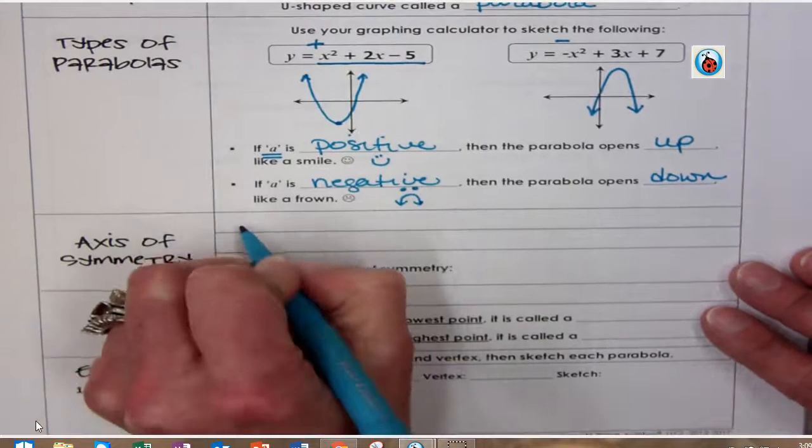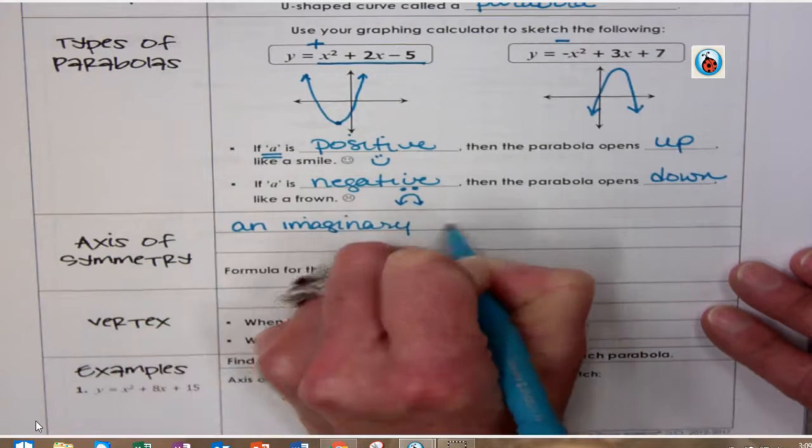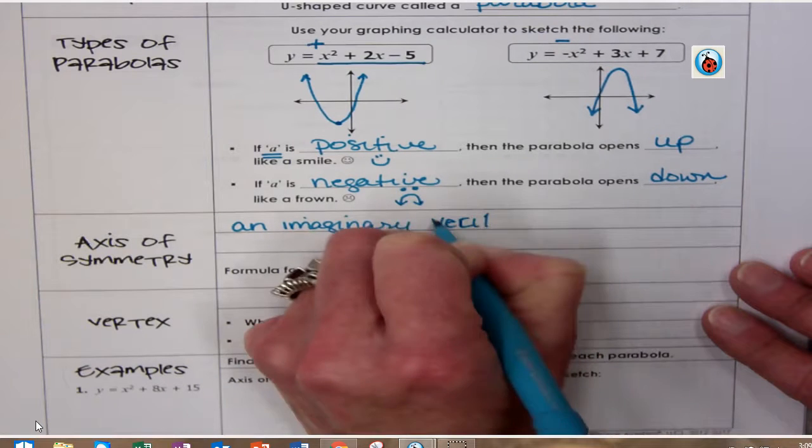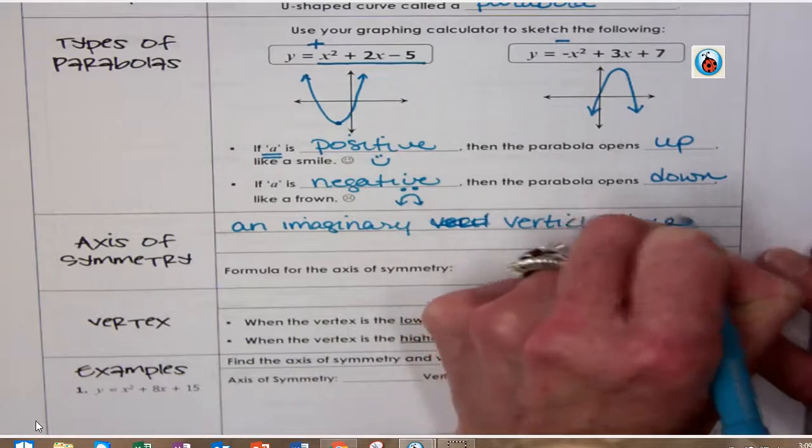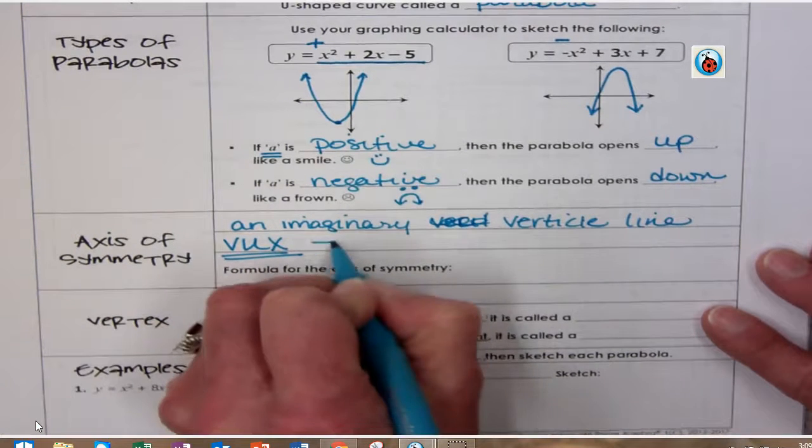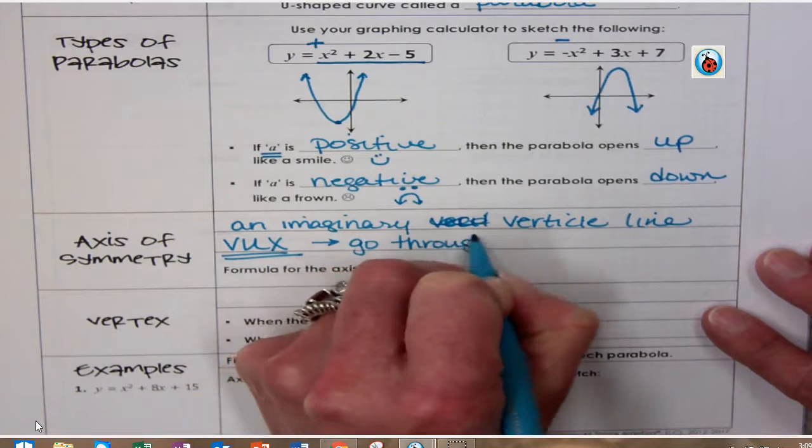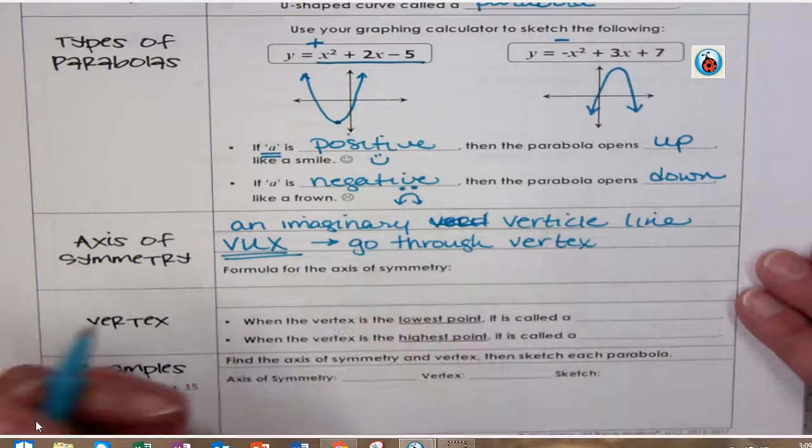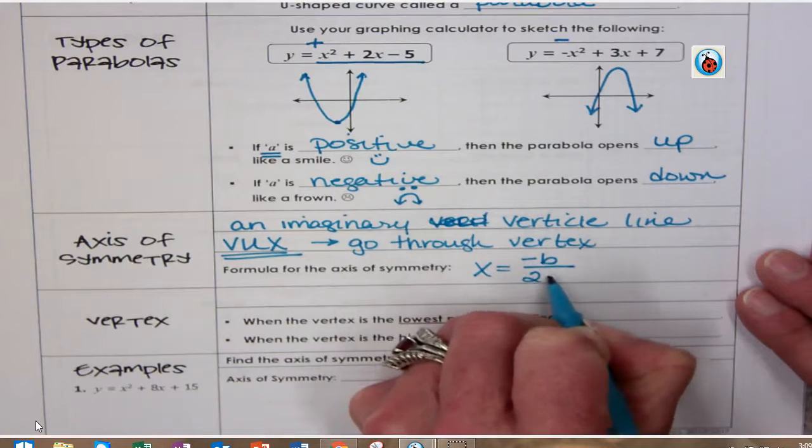The axis of symmetry is an imaginary line, vertical line. Vert-i-cal line. Now, when we say vertical line, we think of vux. And this line is going to go through the vertex. Now, what is the vertex, you might ask? Well, I'll tell you in a second. But the formula for the axis of symmetry is x equals negative b over 2 times a.